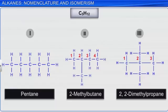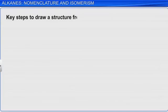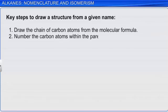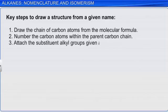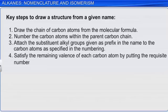Just as it is important to write correct IUPAC names for a compound given its structure, we also need to be able to draw the structure given its IUPAC name. The key steps to draw a structure from a given name are: draw the chain of carbon atoms from the molecular formula; number the carbon atoms within the parent carbon chain; attach the substituent alkyl groups given as prefix in the name to the carbon atoms as specified in the numbering; and satisfy the remaining valence of each carbon atom by putting the requisite number of hydrogen atoms.